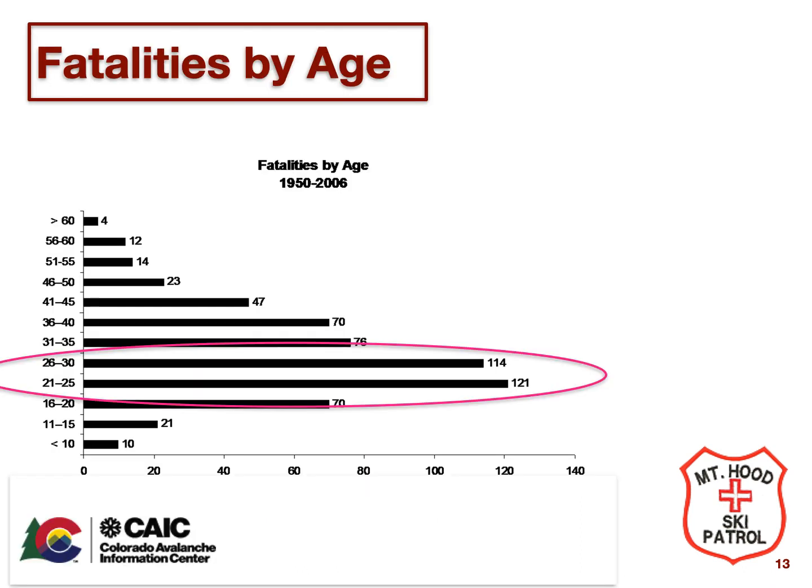This slide shows the age distribution for avalanche accident victims. As you can see, most victims are 20 to 30 years of age, and most are also male.